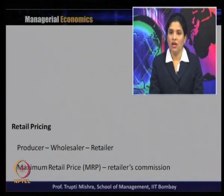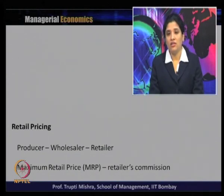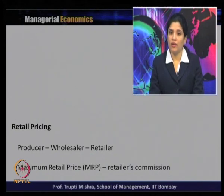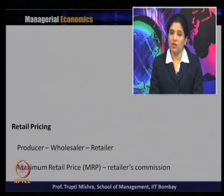Next, we have retail pricing and how it differs from producer or wholesale pricing. In the value chain, the producer sells to the wholesaler, the retailer buys from the wholesaler, and sells in the market. Each step adds a margin. The final price the consumer pays is the Maximum Retail Price (MRP), which includes the retailer's commission. That is the price at which the consumer buys the product from the retailer.